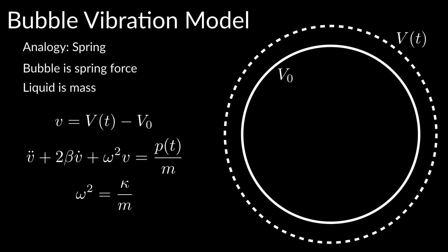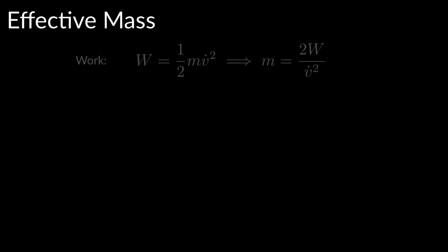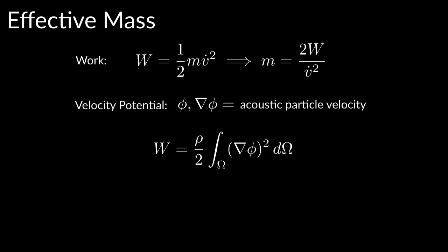We show how to compute the mass term more accurately than in previous work. The mass term can be calculated by computing the work that each bubble does to the fluid. We calculate this by computing a velocity potential function.